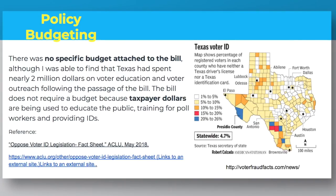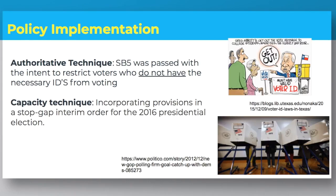Policy budgeting: While there was no specific budget attached to the bill, Texas spent nearly two million dollars on voter education and outreach following the passage of this bill. The bill also does not require a dedicated budget, as taxpayer dollars are being used to educate the public, provide training for poll workers, and provide IDs.